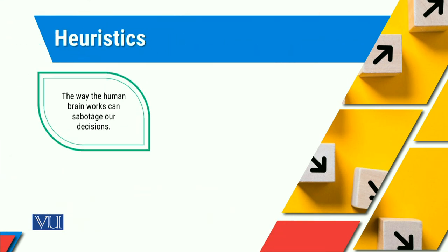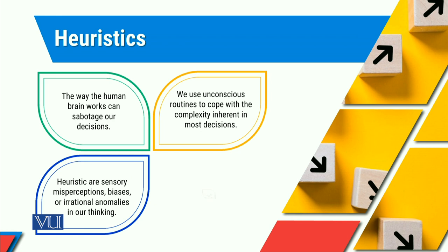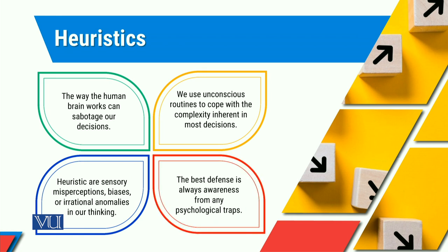Ab us bad decision ki taraf travel karne ke duran, sometimes there can be certain heuristics. Heuristics means that there are certain judgmental shortcuts. For example, there can be stereotype, there can be halo effect, there can be recency error, there can be projection error. Bohut si biases, bohut se prejudice hamare saamne aa sakte hain joh decision making ki effectiveness ko reduce kar dhein. So heuristics, which are technically judgmental shortcuts, what they can do is that the human brain can sabotage our decisions.